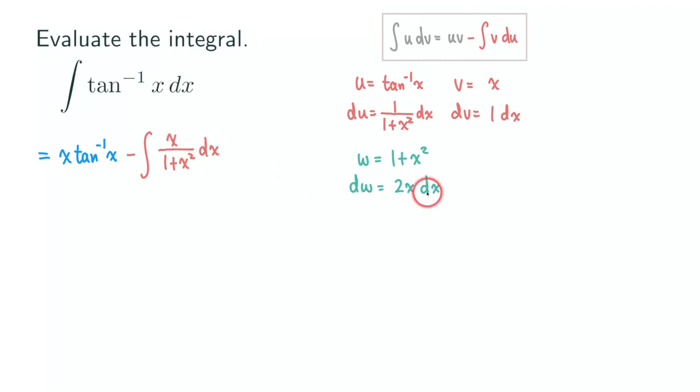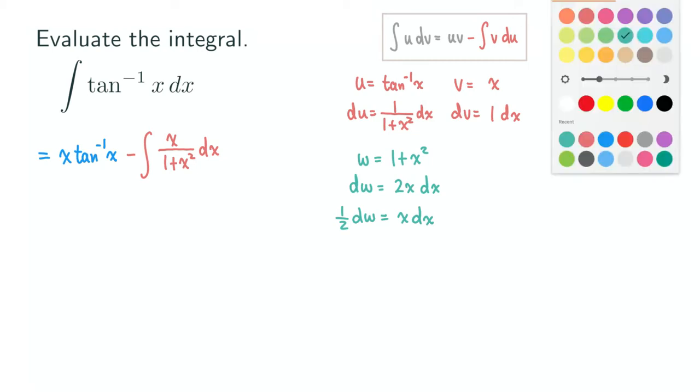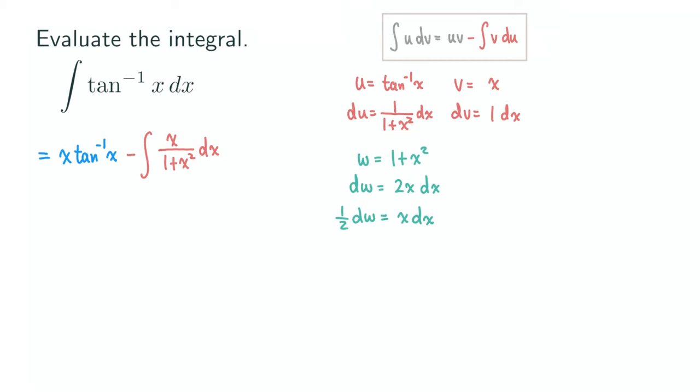Which is just x and dx. So I don't need the 2, I just need the x and the dx on this side. So that means I can get the 2 on the other side of the equation. I divide both sides by 2. So I'm going to get 1 half dw is equal to x dx. Okay, so we're ready to go with our u substitution. So let's continue with our problem here.